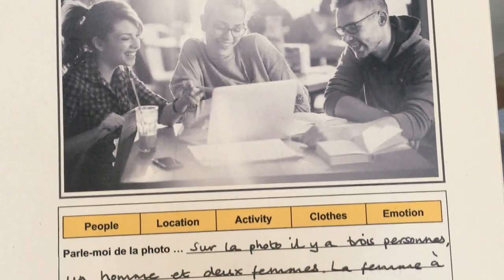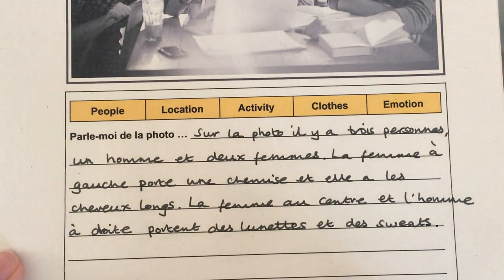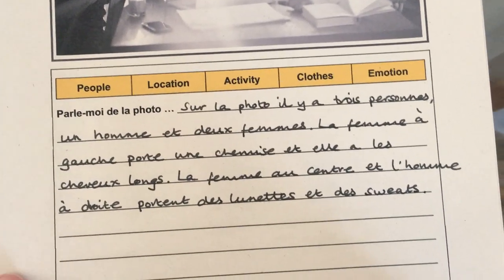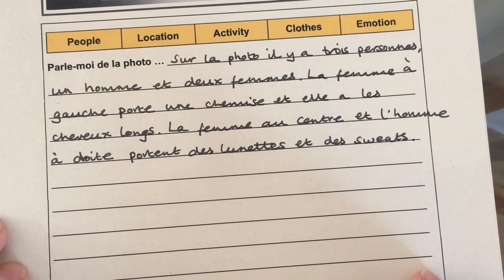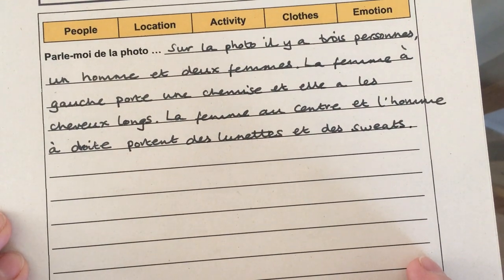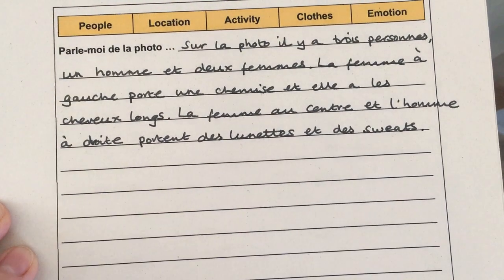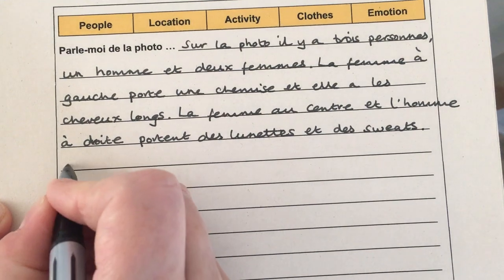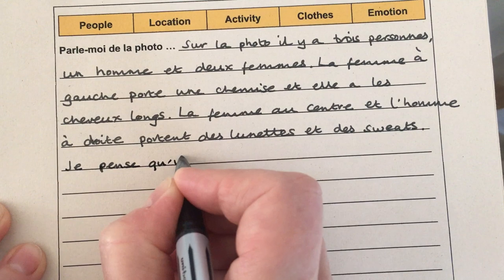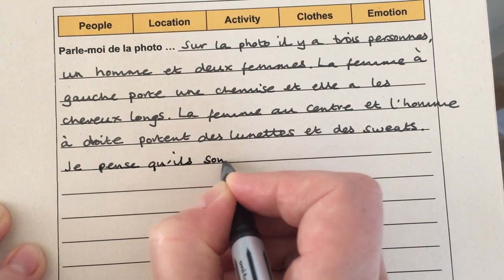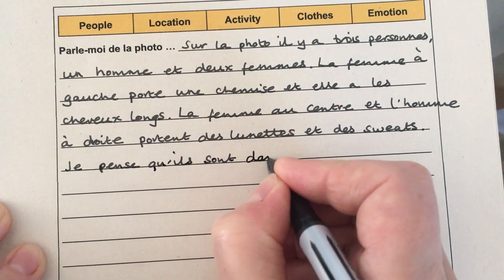So the next thing I need to move on to is the location. Now you may not be sure where they are. I personally think they're in a cafe, and if that is possible then that's fine. So I am going to go with the idea of a cafe, but I am actually going to put in an opinion starter to show that this is my opinion: 'Je pense qu'ils sont dans un café.' — I think that they are in a cafe.